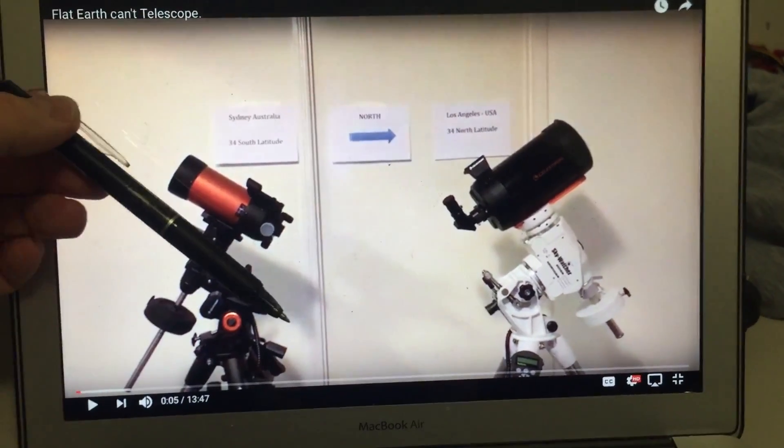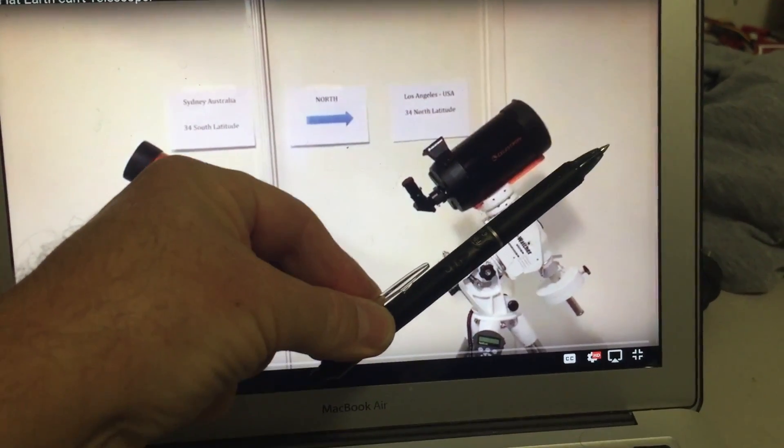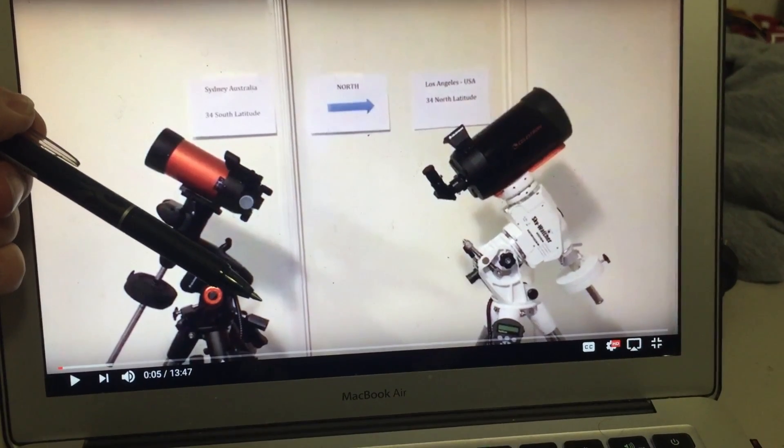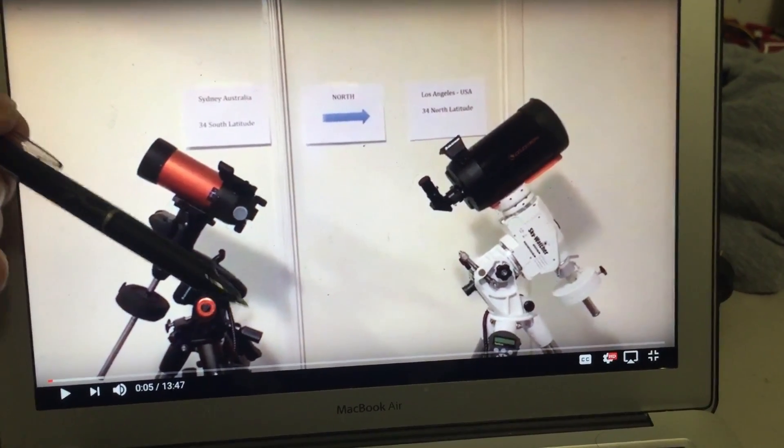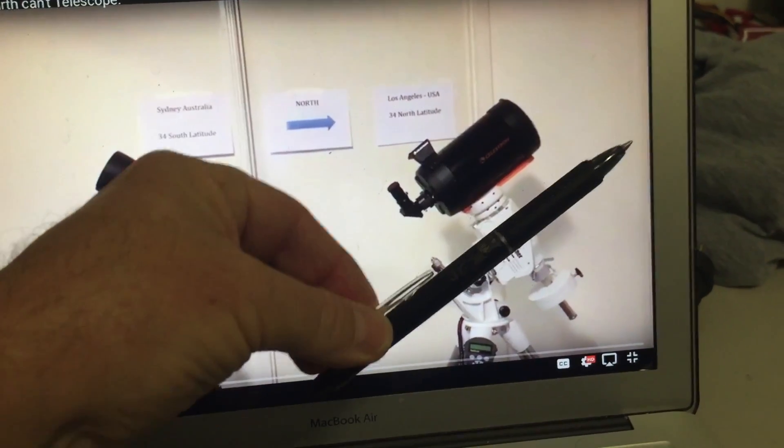The polar axis of each telescope on a flat surface is aligned differently, even though these telescopes are actually configured and set up for their respective locations for Sydney at south 34 latitude and Los Angeles at north 34 latitude.